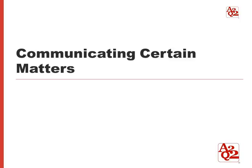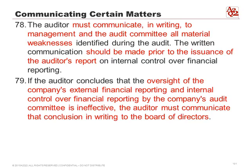Communicating certain matters — this is important to us. Even though it relates to the external auditors, we want to know what external auditors are going to be telling our clients and management team. Paragraph 78 says the auditor must communicate in writing to management — the CFO, CEO, controller, and all of those — and also to the audit committee, about material weaknesses. This written communication has to happen before they issue the auditor's report.